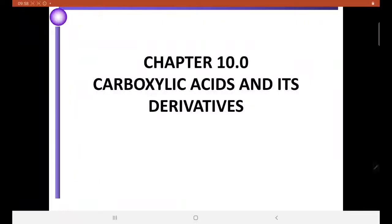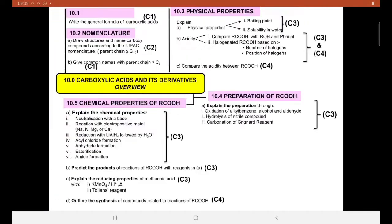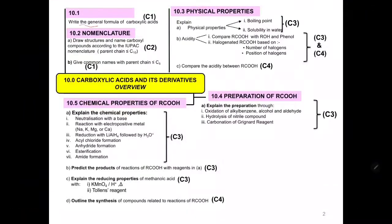Chapter 10: carboxylic acid and its derivatives. In chapter 10, I will cover 10.1 to write the general formula of carboxylic acid, and 10.2 nomenclature. Part A: draw the structure and name the carboxyl compound according to the IUPAC nomenclature when the parent chain is less than C10. Part B: give the common name with the parent chain equal or less than C5.